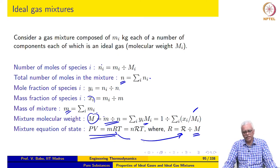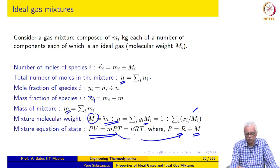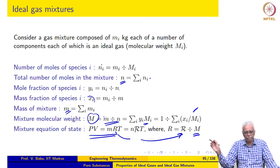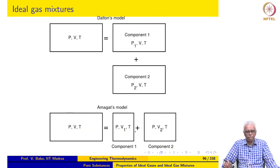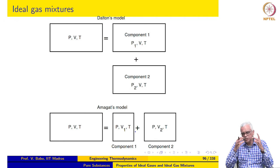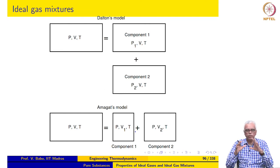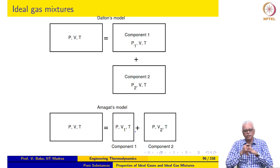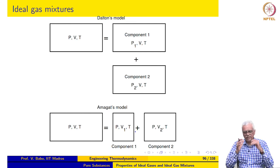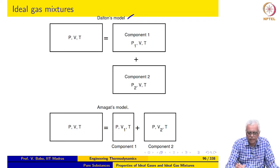The equation of state for the mixture still has the same form — it is as though it is a single component gas with the molecular weight equal to the mixture molecular weight M. For the entire mixture we may write PV = MRT, or equivalently PV = nR̄T, where n is the number of moles of the mixture and R̄ is the universal gas constant. Two models are widely used to relate individual components to the mixture: Dalton's model and Amagat's model.